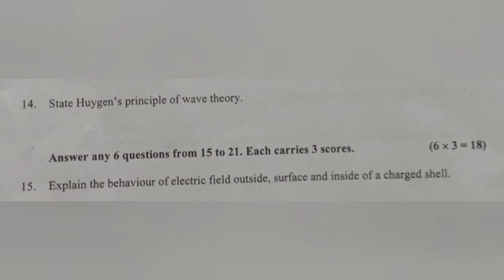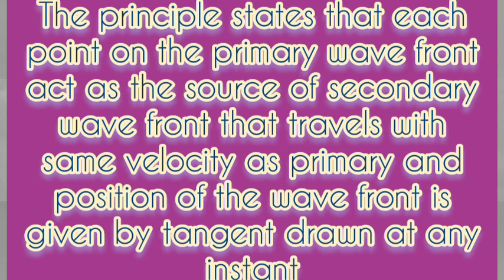Question 14. State Huygens principle of wave theory. Answer: The principle states that each point on the primary wave front acts as the source of secondary wave front that travels with same velocity as primary, and position of the wave front is given by tangent drawn at any instant.